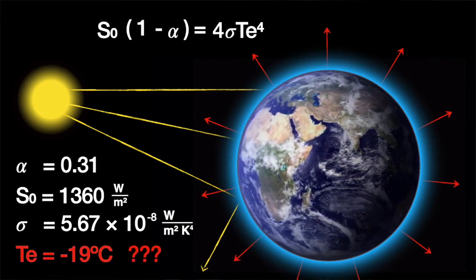Minus 19 degrees Celsius? That's way too low! Most of the planet's surface is a lot warmer than that most of the time. So what's going on here?